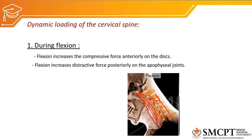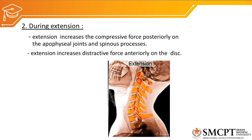During flexion, greater compressive force is generated anteriorly on the vertebral disc and body, while distractive force acts posteriorly on the apophysial joint and spines. During extension, it is the opposite: there is distractive force anteriorly at the vertebral body and intervertebral disc, and compressive force posteriorly on the apophysial joint and spinous process.